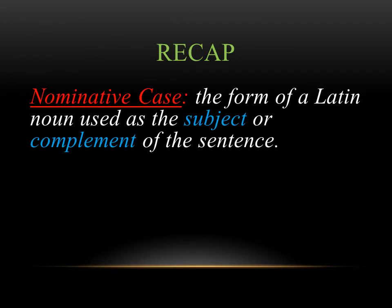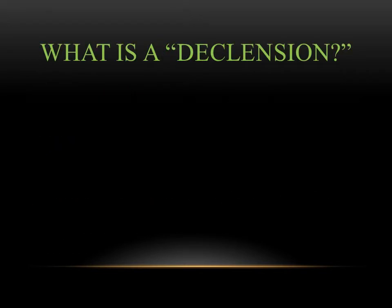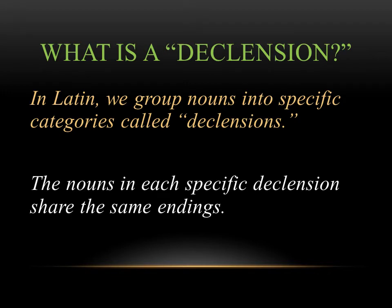To recap: the nominative case is what we call the subject or complement of the sentence. When you have a noun being used as the direct object, we call this the accusative case. Now, what is a declension? In Latin, we group nouns into specific categories called declensions, and the nouns in each specific declension have the exact same endings — that's how we group them together.